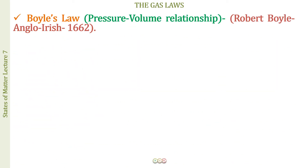Before I begin with the study of Boyle's law, there is one very interesting thing you will see in all four laws: we have four measurable properties, and we will be seeing the relationship between two properties while keeping the other two fixed. For example, in Boyle's law, it is a relationship between pressure and volume, so the two quantities we keep fixed are the mass and the temperature of the gas.